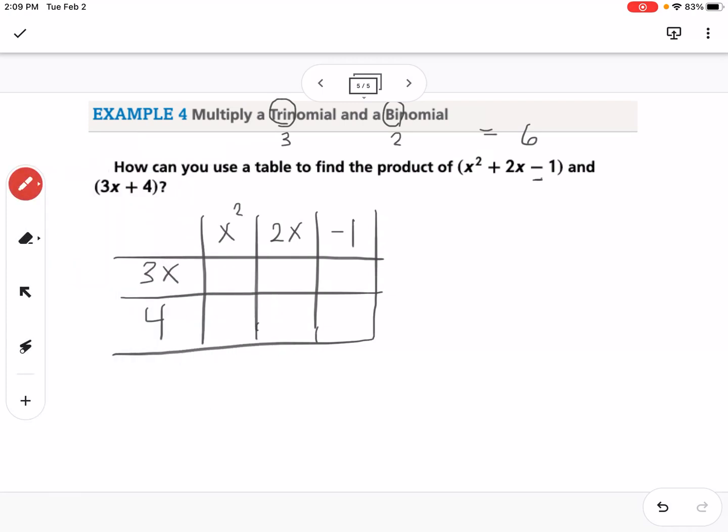So 3x times x squared is 3x cubed. 3x times 2x is 6x squared. 3x times negative 1 is negative 3x. 4 times x squared is 4x squared, 4 times 2x is 8x, and 4 times negative 1 is negative 4.